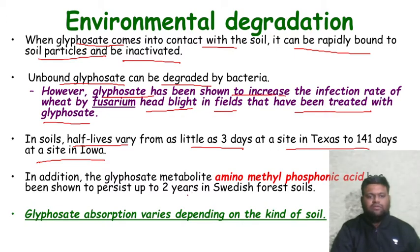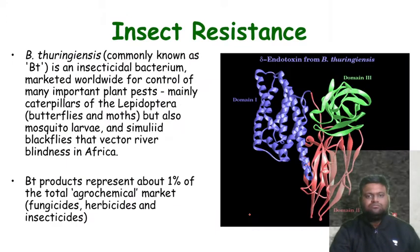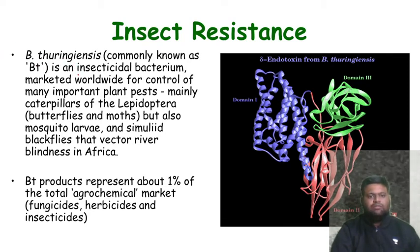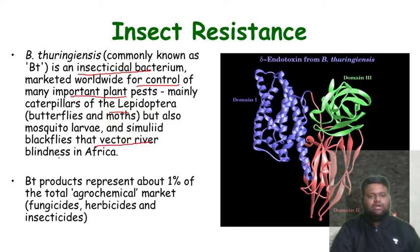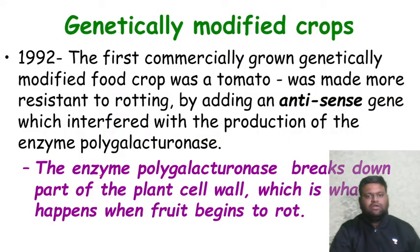In addition, the glyphosate metabolite amino methyl phosphonic acid (AMPA) has been shown to persist up to two years in Swedish forest soils. Glyphosate absorption varies depending on the kind of soil. Bacillus thuringiensis is an insecticidal bacterium marketed worldwide for the control of many important plant pests, mainly caterpillars from Lepidoptera, but also including mosquito larvae and black flies that vector river blindness in Africa. From Bt genes, insect resistance is introduced into crops.